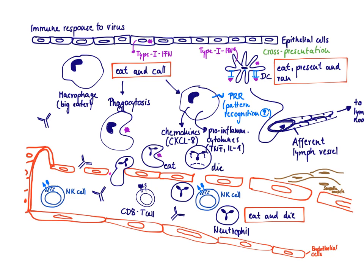A very important function of the dendritic cell is to initiate an adaptive immune response. To initiate a T-cell response, the dendritic cell needs to present its antigen on an MHC class molecule. The major adaptive response most useful in a viral infection is a CD8 T-cell response. To generate that, the dendritic cell needs to present antigen on an MHC class 1 molecule.